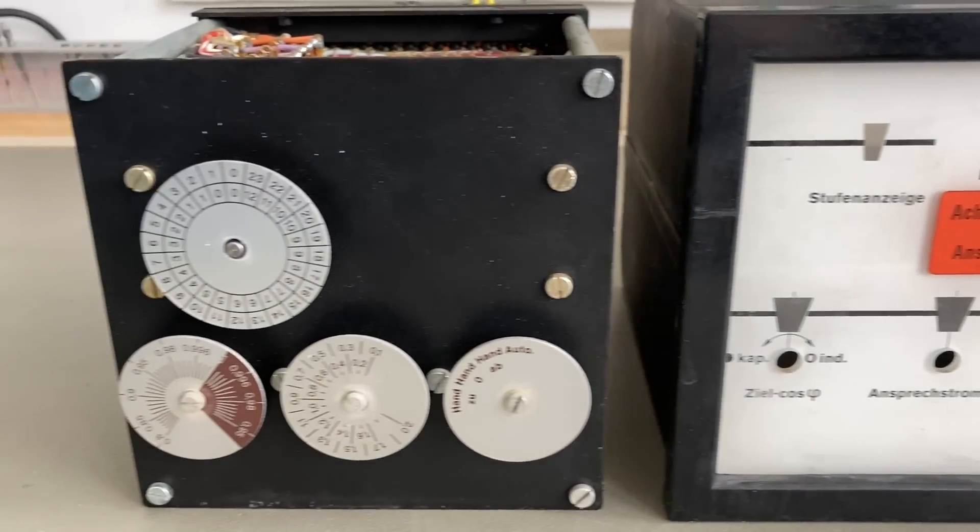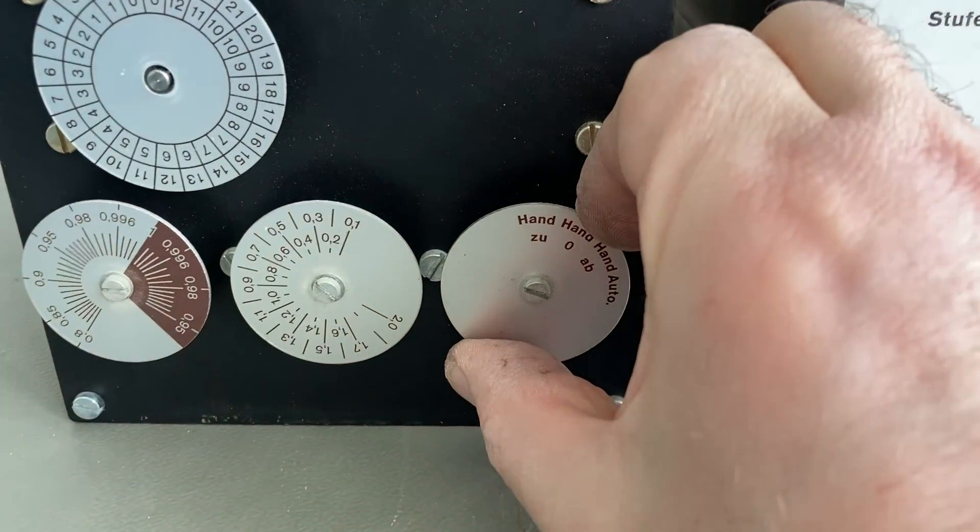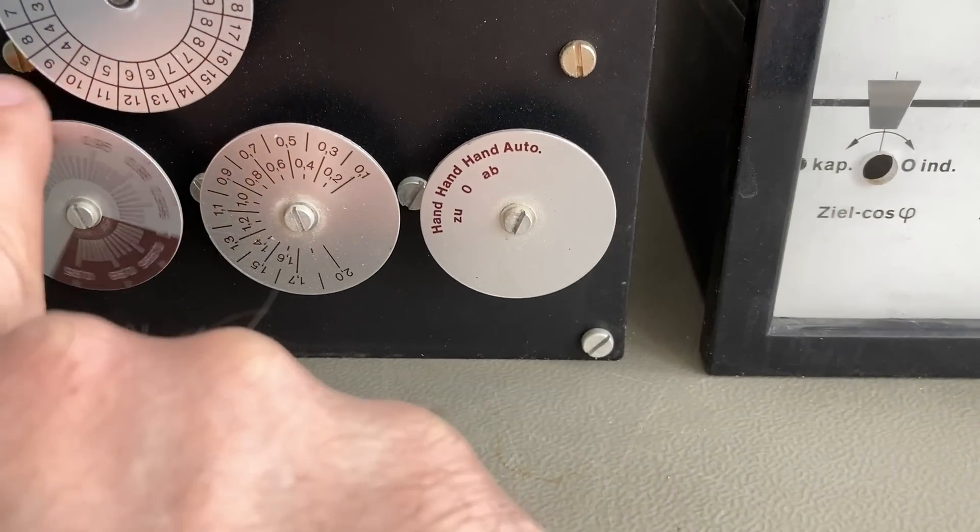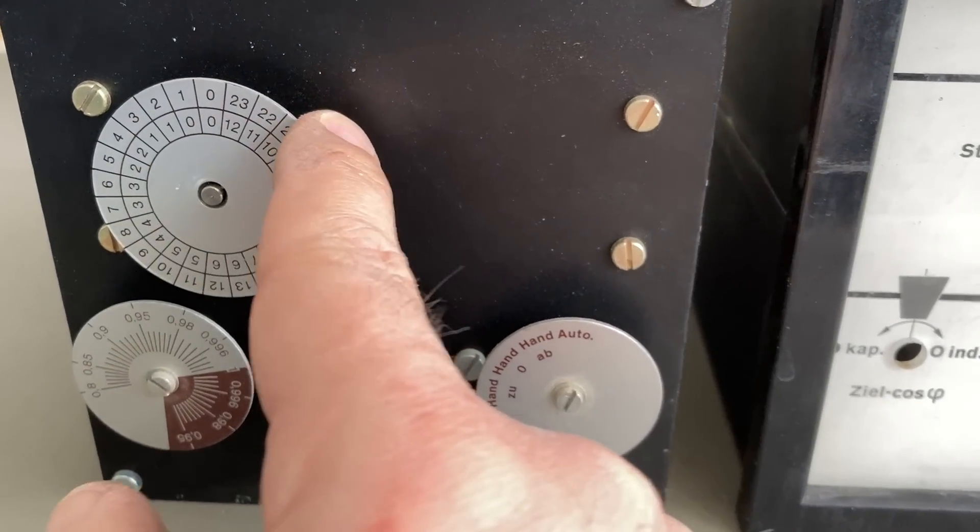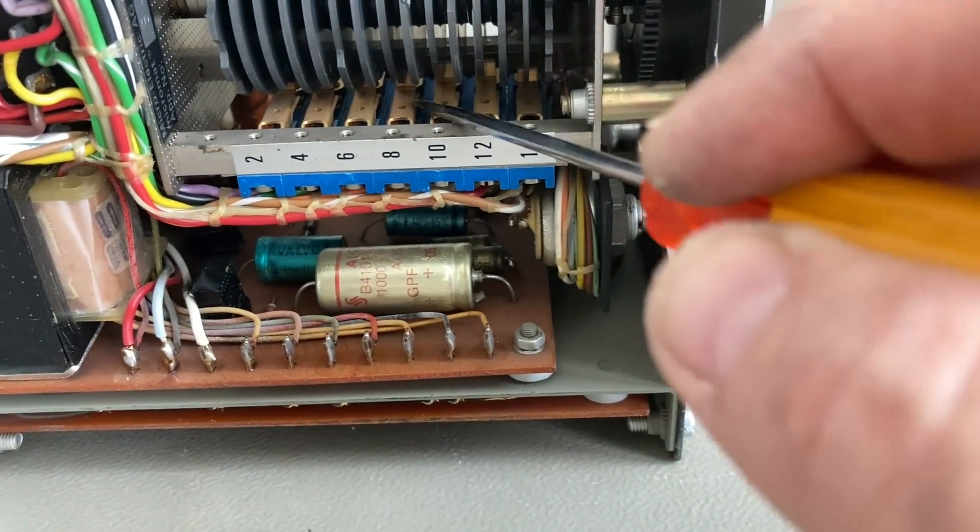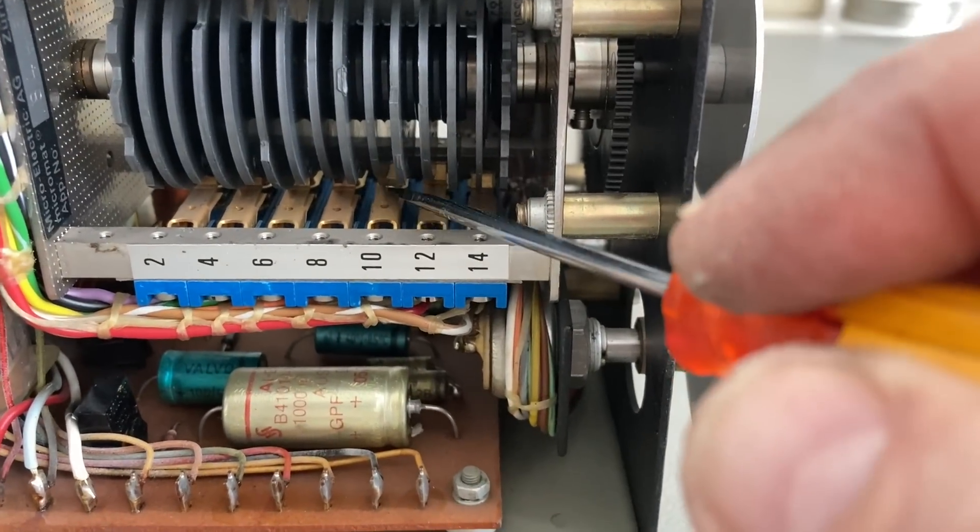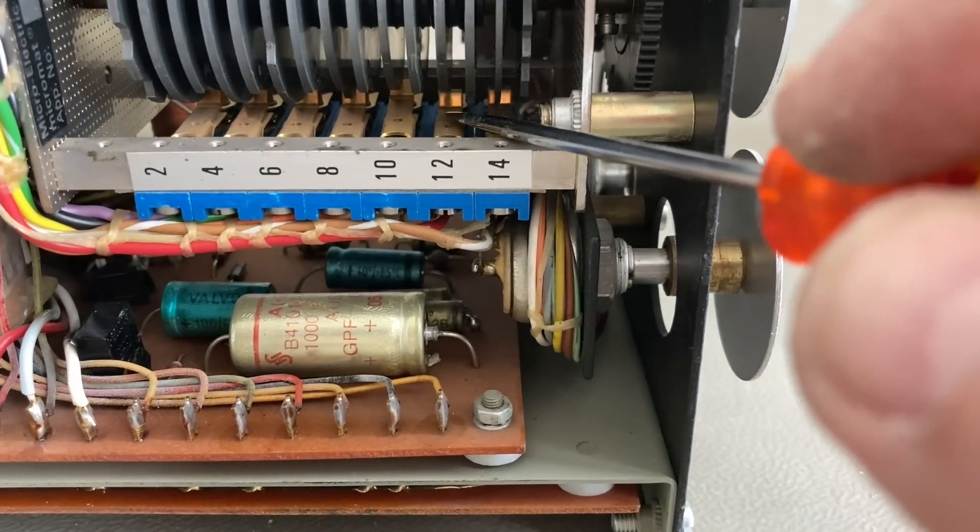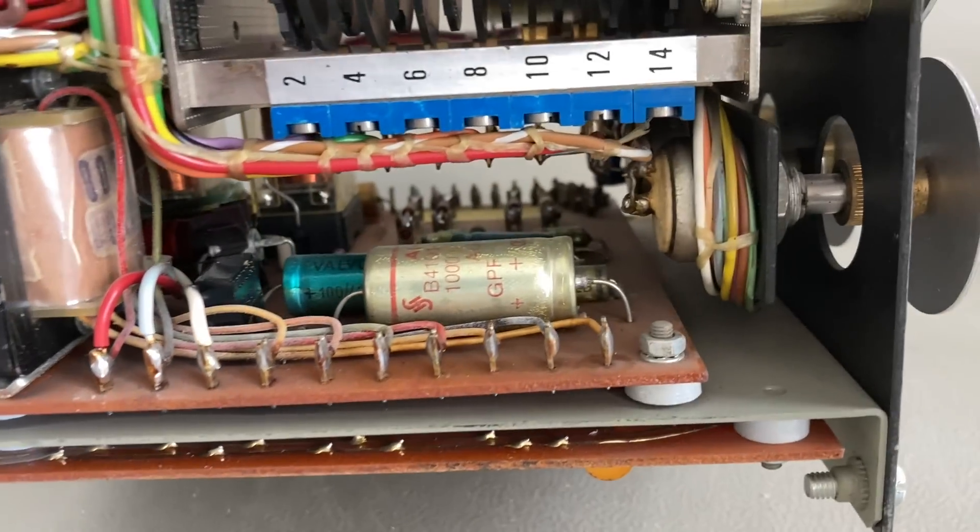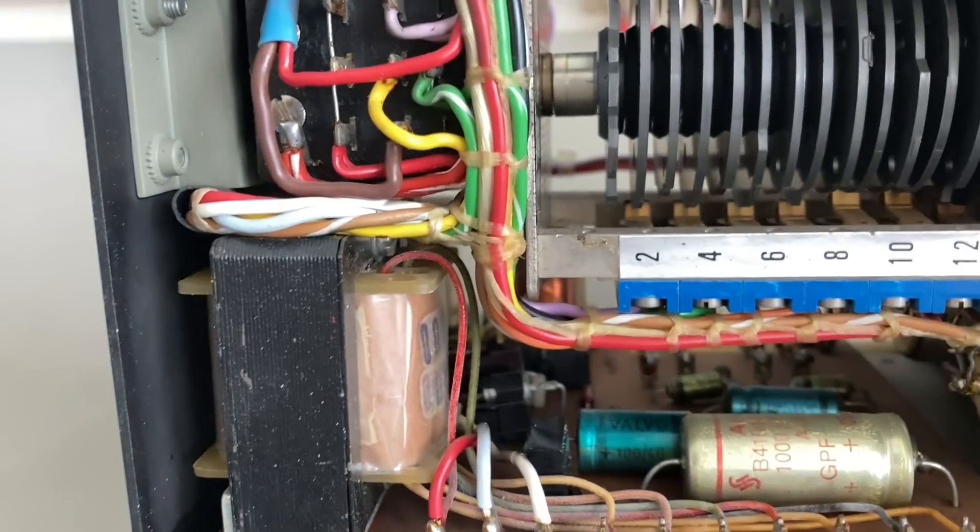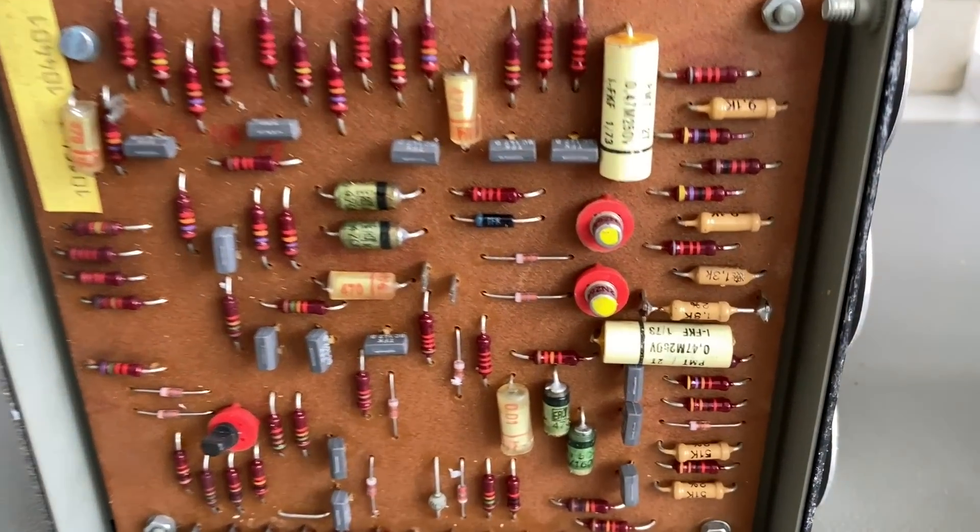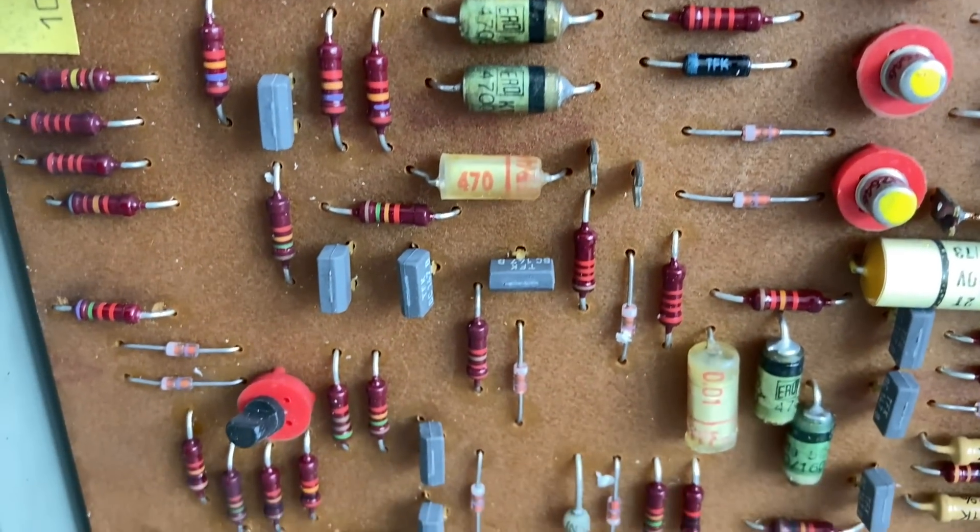Here is the most interesting part, the controller. It has a switch for automatic or manual control. It has a dial for current and the desired cosinus phi, the phase shift that should be achieved. Here are the switches that go to the individual relays. It is made to handle bigger appliances. What it does, it measures the phase shift between voltage and current and connects capacitors whenever they are needed or disconnects them when the inductive load is getting lower.